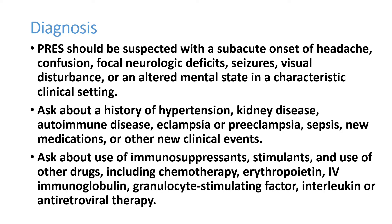History should include any kidney disease which can lead to hypertension, autoimmune diseases like SLE, eclampsia or preeclampsia features in pregnant ladies, sepsis, any new medication started, or any other clinical events which aggravated the patient's previous conditions including hypertension. We should ask if patients are taking immunosuppressants, stimulants, chemotherapy, erythropoietin, IVIG, CSF, GM-CSF, interleukins, or antiretroviral therapy — all these things can precipitate an attack of PRES.